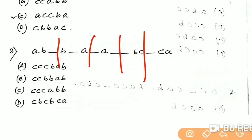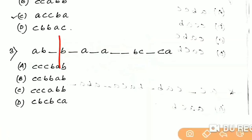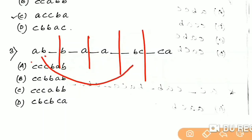I will show you the first question. Here the second letter is B and the second letter is B. Here C is a new one, so here C is not a new one, so here ABC is a new one.